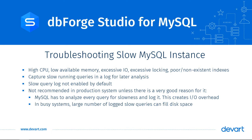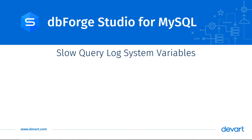That's why the slow query log should be enabled only during performance troubleshooting and disabled immediately after the issue has been resolved. There are a few system variables that control how the slow query log behaves. The first one is slow_query_log. If we set this variable to 1, the slow query log will be enabled.